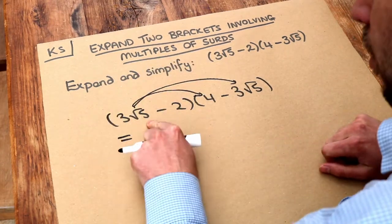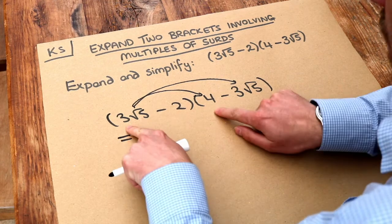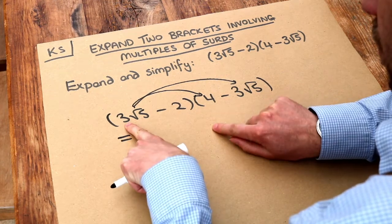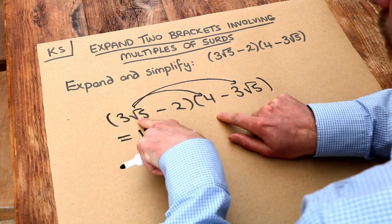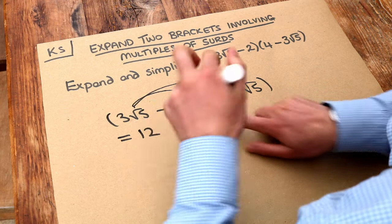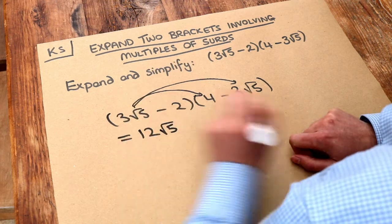If we have three lots of root five and we times by four, remember we times the non-surds together first. Three times four is twelve, and then we times the surds together. Well, root five is the only surd, it's the only thing with a square root over it, and we get root five.